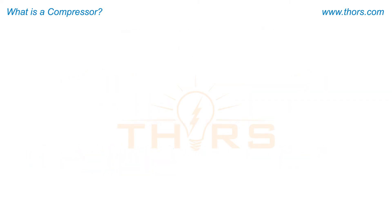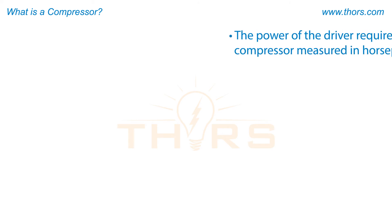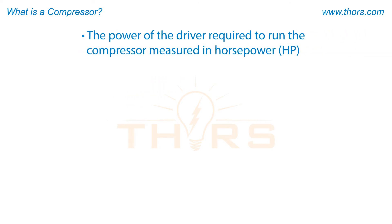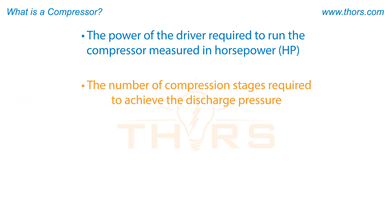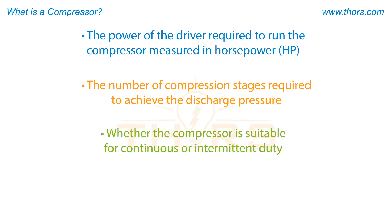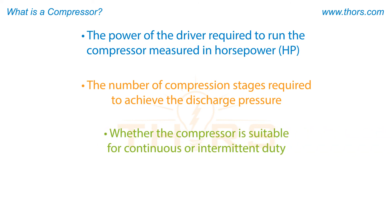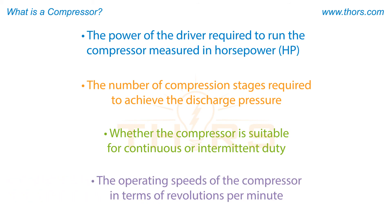Other important specifications include the power of the driver required to run the compressor measured in horsepower, the number of compression stages required to achieve the discharge pressure, whether the compressor is suitable for continuous or intermittent duty, and the operating speeds of the compressor in terms of revolutions per minute.